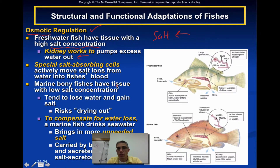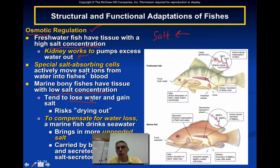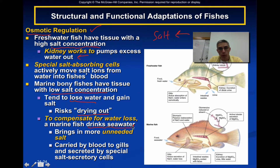Marine fish actually have tissues that are very low in salt concentration. Since the outside environment is heavy in salt and the inside cells have very low salt, these animals tend to lose a lot of their water — the water leaves their cells and they risk drying out and dehydrating. To compensate for water loss, a marine fish is constantly drinking seawater. Obviously, drinking seawater brings in a lot of unneeded salt, which is carried by the blood to the gills and secreted by special salt secretory cells.